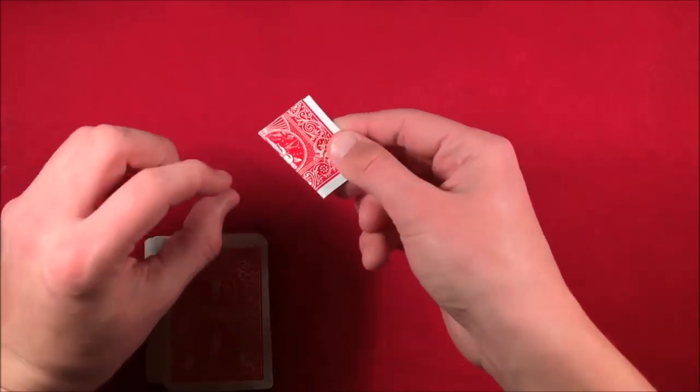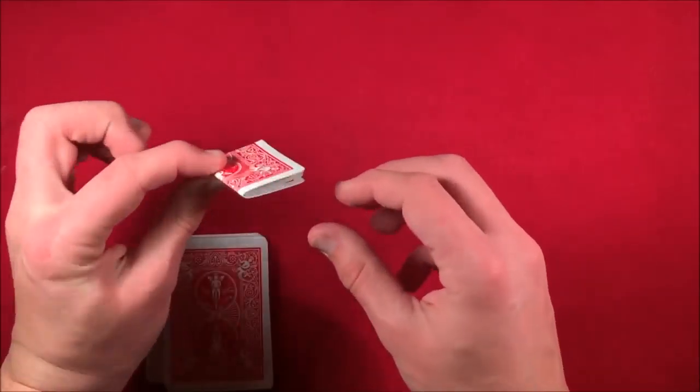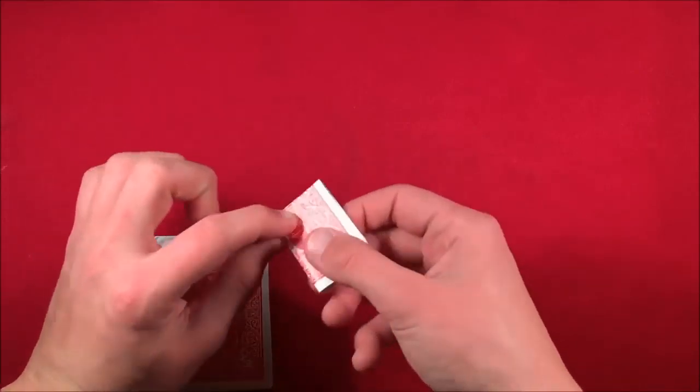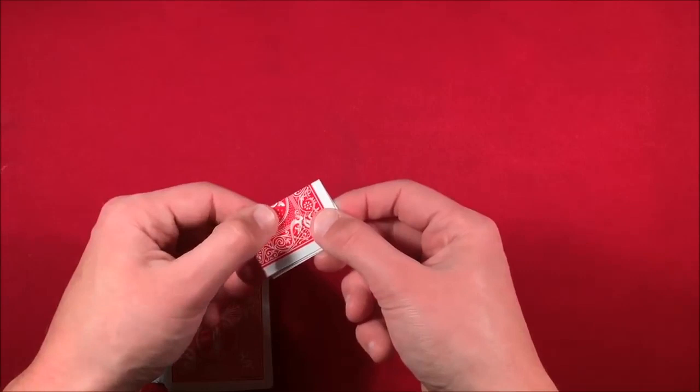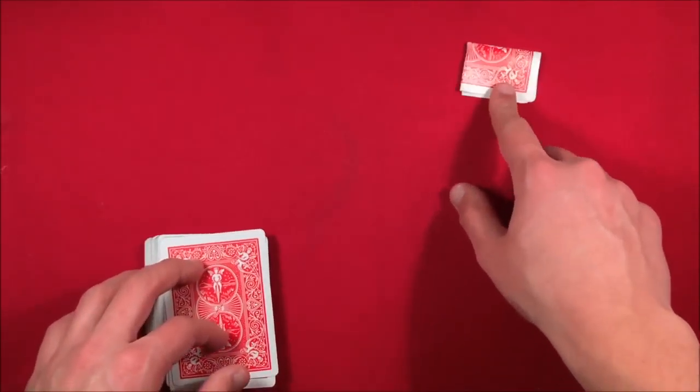Have them bite where these flaps are. Don't have them bite where the crease is, because if they bite here then these little flaps can open up and you might flash the card. Make sure they're biting the card right around here with the flaps.